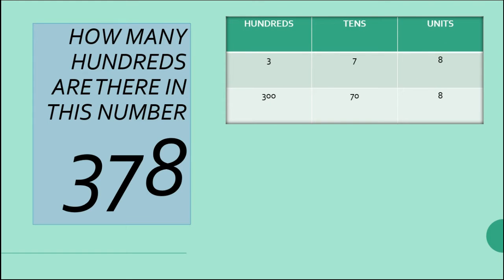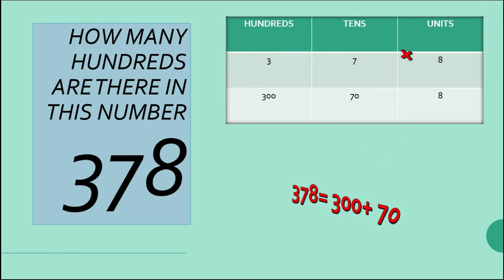Now, we have seen the numbers and their place values. This is the expanded form: 378 is equal to 300 plus 70 plus 8.